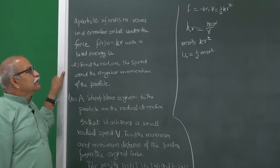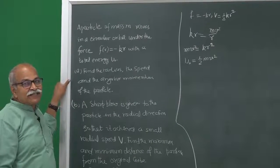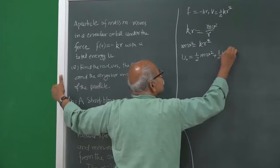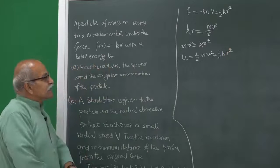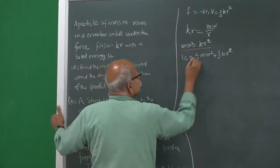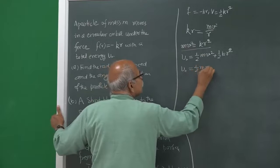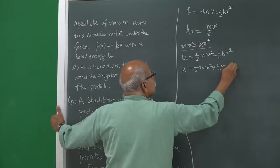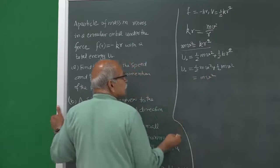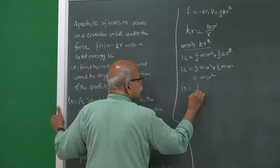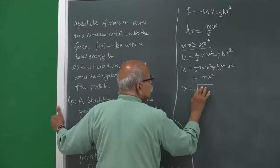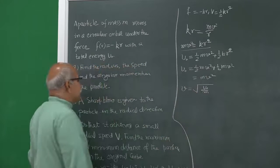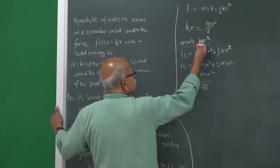It is half k r squared — if you differentiate and put a minus sign you will get the force. So the total energy is half m v squared plus half k r squared. These are the two equations with two unknowns. Using these, u_naught equals half m v squared plus half k r squared, which equals m v squared. Therefore v equals the square root of u_naught divided by m.